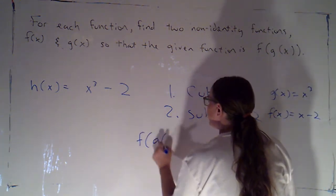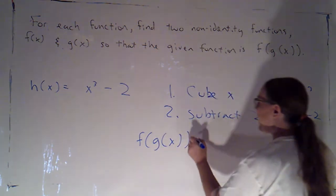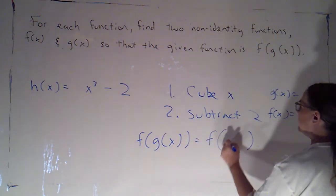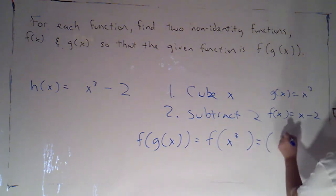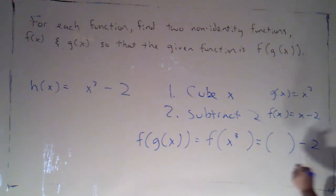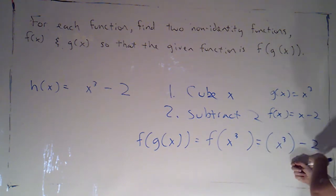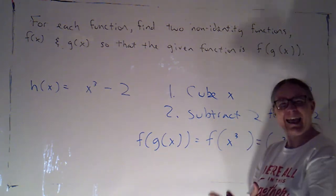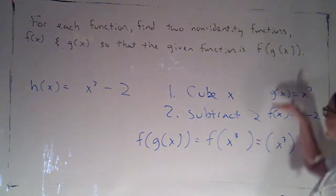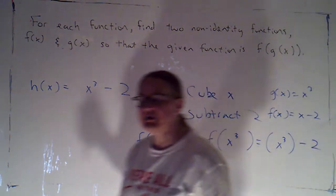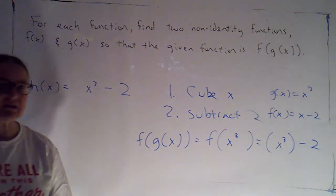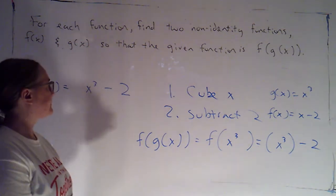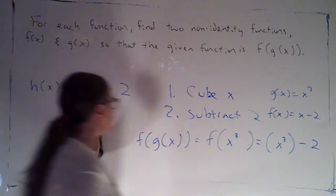Notice, now when I look at f of g of x, that becomes f of x cubed. That has me put an x cubed in that input position so that I'm subtracting 2 from x cubed. If I tried to make f of x be x cubed minus 2, when I plugged in x cubed, I'd have to cube that again. I don't want to do that. With each of these pieces, we're just using x as a placeholder for the input.